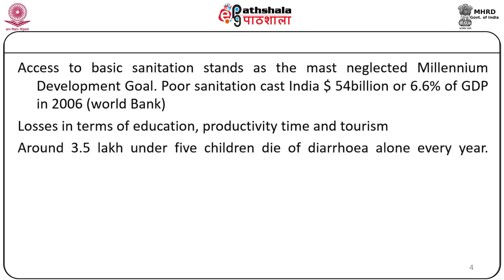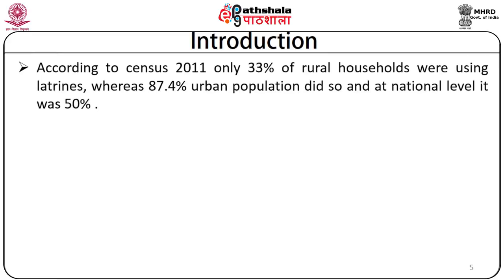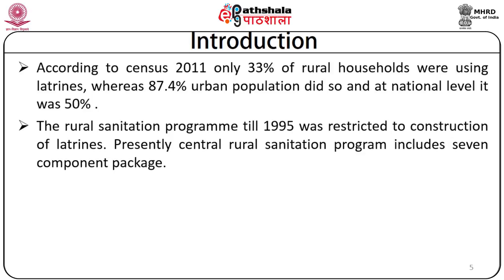Around 3.5 lakh under-5 children die of diarrhea alone every year. According to Census 2011, only 33% of rural households were using latrines, whereas 87.4% of the urban population did so, and at the national level it was 50%. Rural sanitation has not reached two-thirds of the rural population. Rural sanitation was programmed till 1995, with emphasis only on construction of latrines, but recently the Central Rural Sanitation Program has been expanded to include seven different packages.